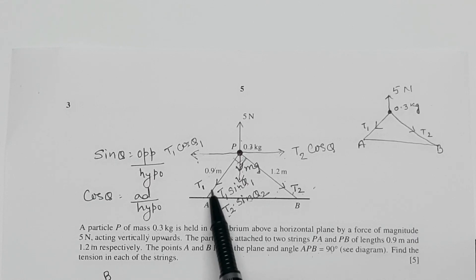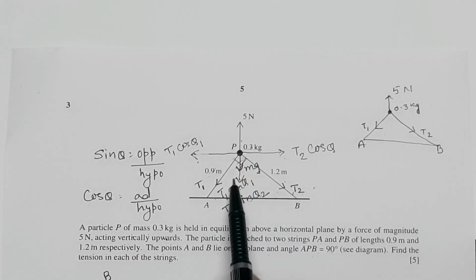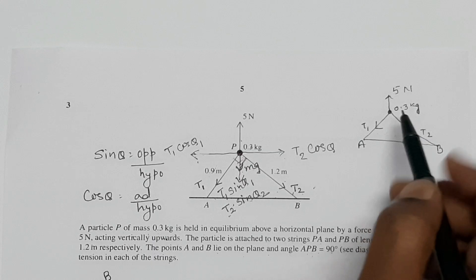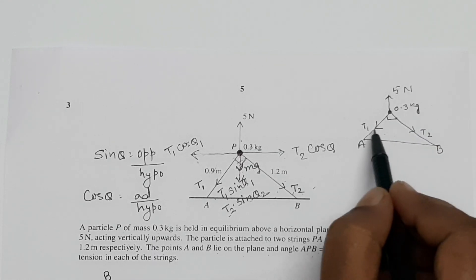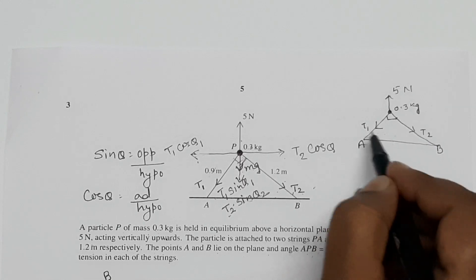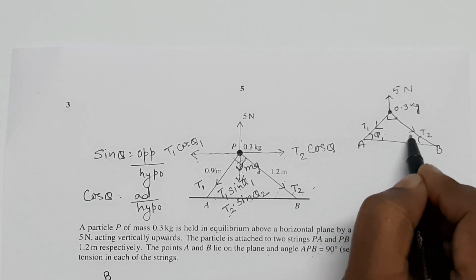The question is we have to find the tension in the string AP and string BP. So I have just taken this diagram over here. This angle is 90 degree. Now we will see the component of this T1 and T2. This we can consider theta 1 and this we can consider theta 2.